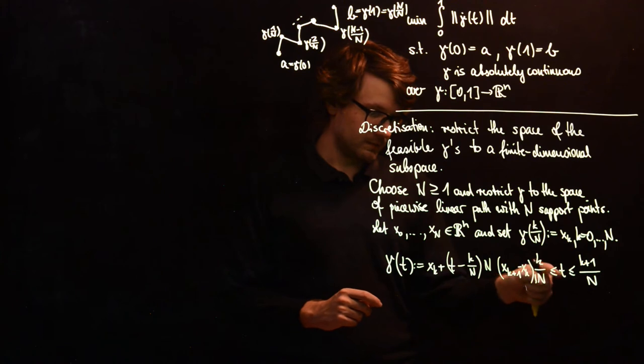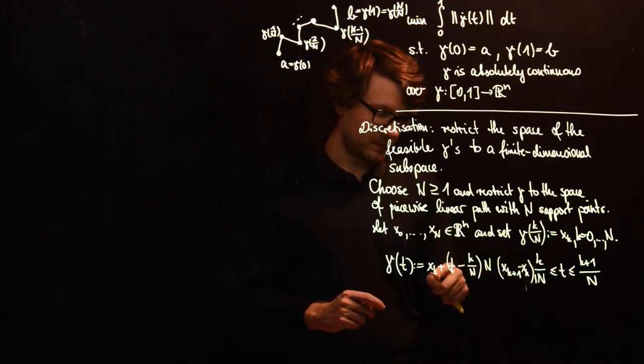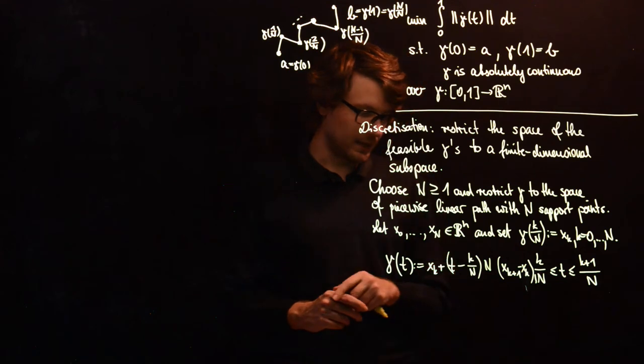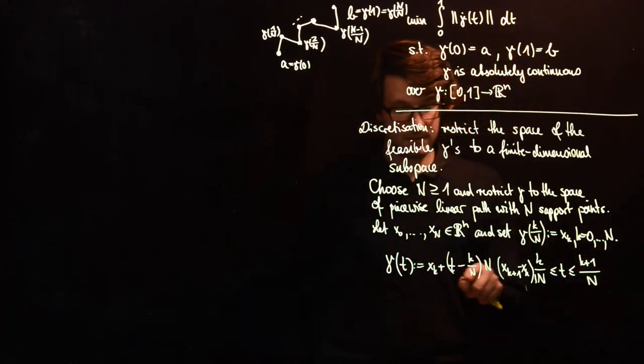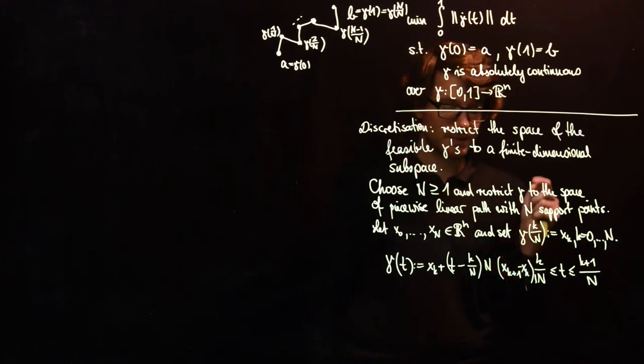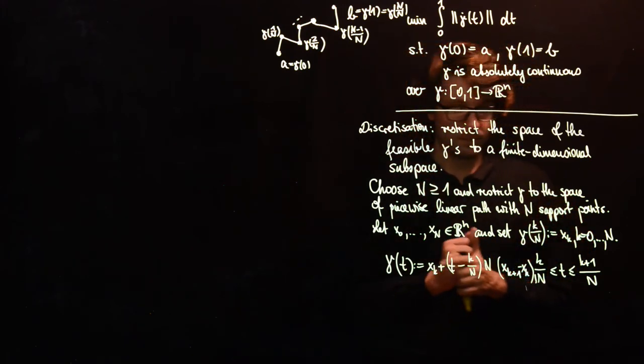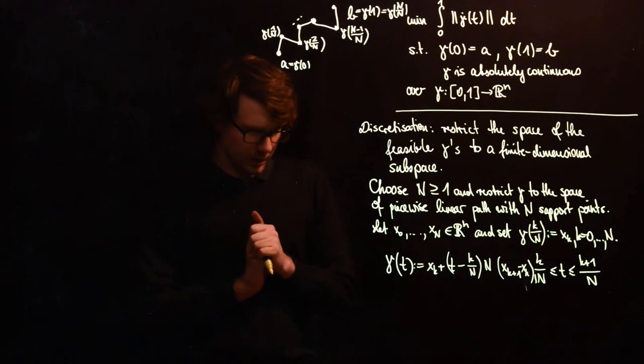And if you set t equals to K over N, then the second sum disappears and this will be xK. If you set t equal to K plus 1 over N, then this whole thing will be 1 and this will be xK plus xK plus 1 minus xK, which is exactly what we want.